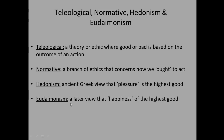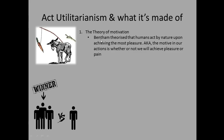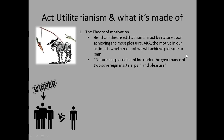Act utilitarianism is made of three things. First, the theory of motivation: Bentham says that by nature we act to achieve the most pleasure and avoid the most pain. A good example is a donkey with a carrot and a stick — moving toward the carrot for pleasure and away from the stick to avoid pain. The quote to use is: 'Nature has placed mankind under the governance of two sovereign masters — pleasure and pain.'